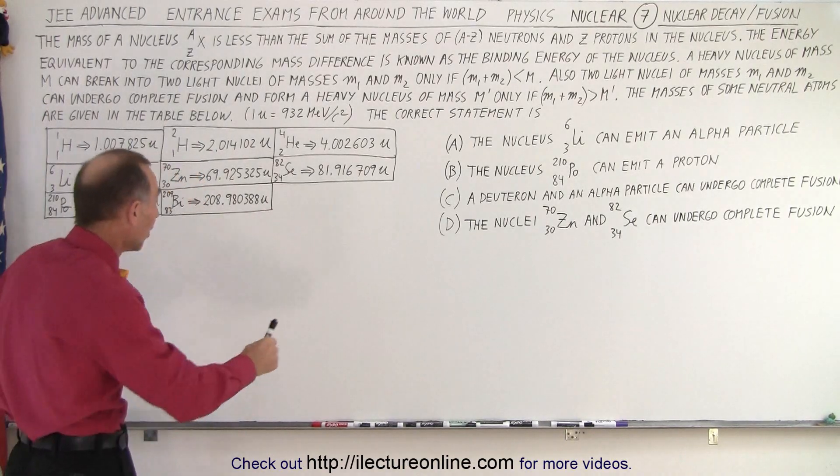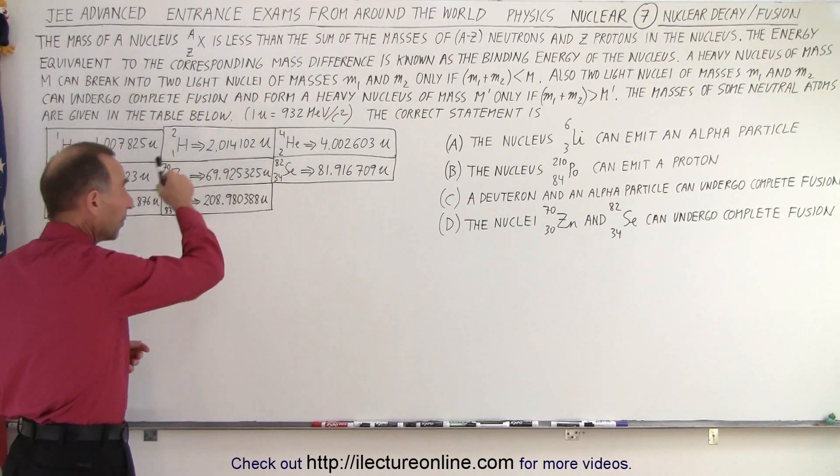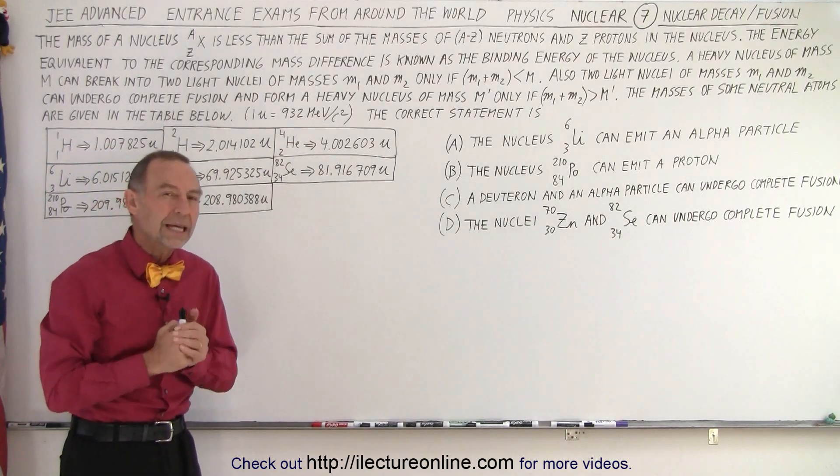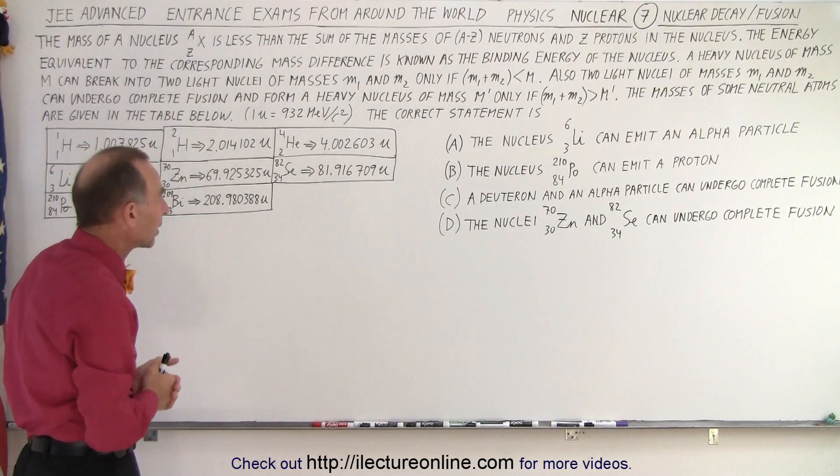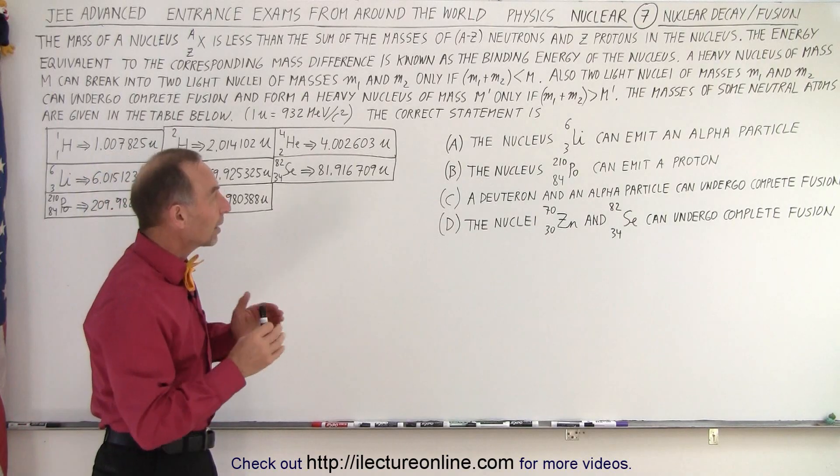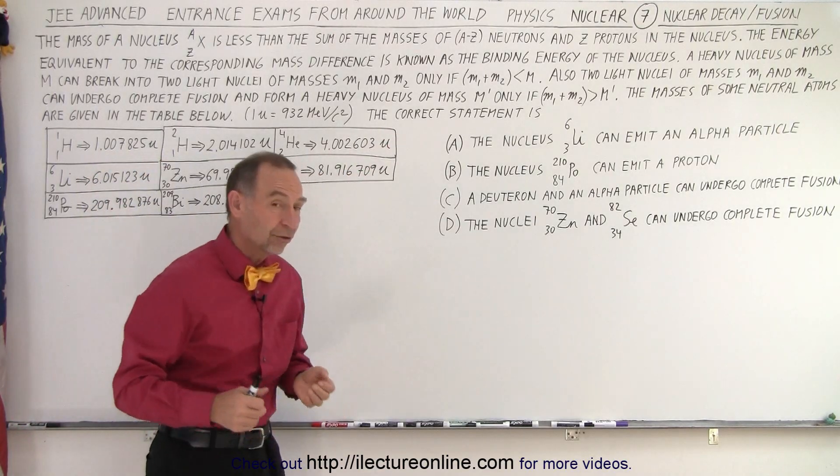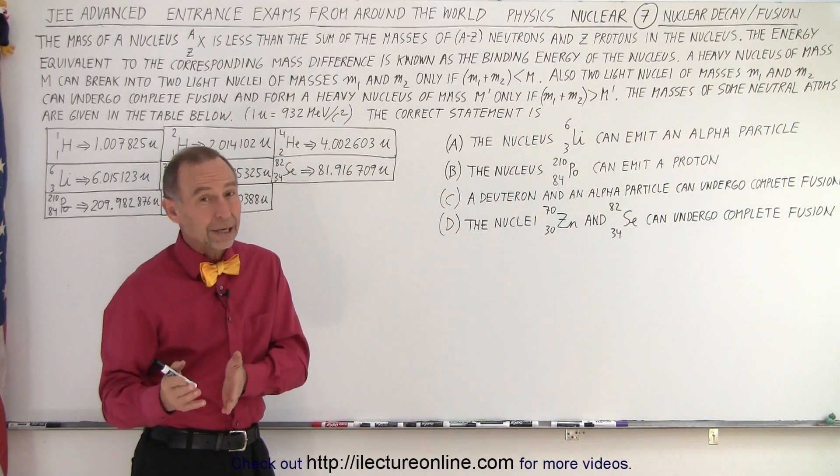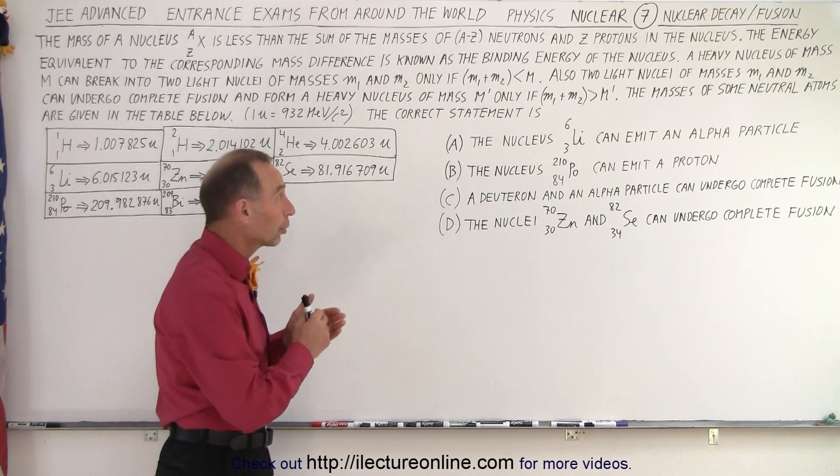However, in some cases, we need to check, and so we have some masses in atomic mass unit for some of the neutral atoms that we may be considering. So now let's look at the four possible answers to determine which of those four, again, it can be anywhere from one to four, are correct.